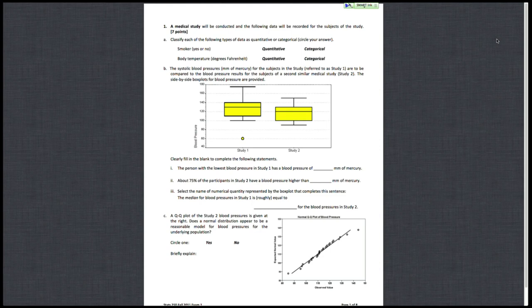The first variable is smoker, yes or no. Since we're recording an outcome that's either yes or no, a name, this is a categorical response. And then body temperature is going to be recorded, but that's in degrees Fahrenheit. So that's on a numerical scale and this is then quantitative.